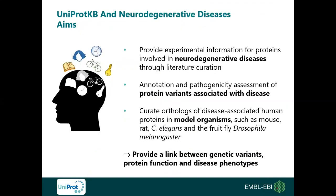At UniProt we have several curation projects ongoing, and one of these projects is focusing on proteins involved in neurodegenerative diseases. The aim of the project is to provide experimental information for proteins involved in neurodegenerative diseases through literature curation, the annotation and assessment of pathogenicity of protein variants associated with disease, and the curation of orthologues of disease-associated human proteins in model organisms such as mouse, rat, C. elegans, and the fruit fly Drosophila melanogaster. With these curation efforts, we hope to provide a link between genetic variants, protein function, and disease phenotype.